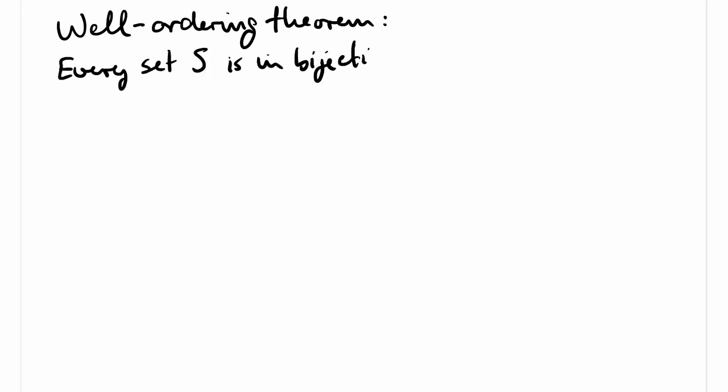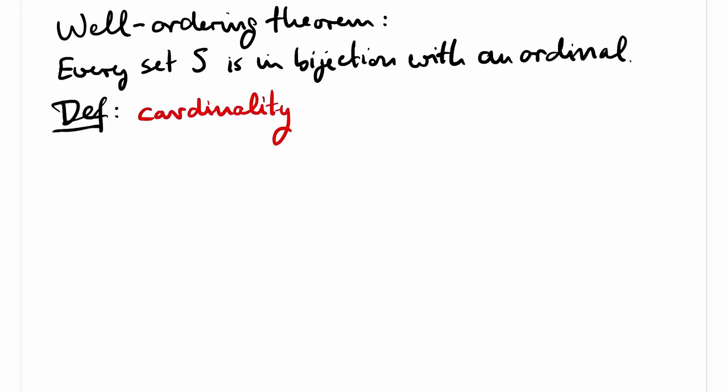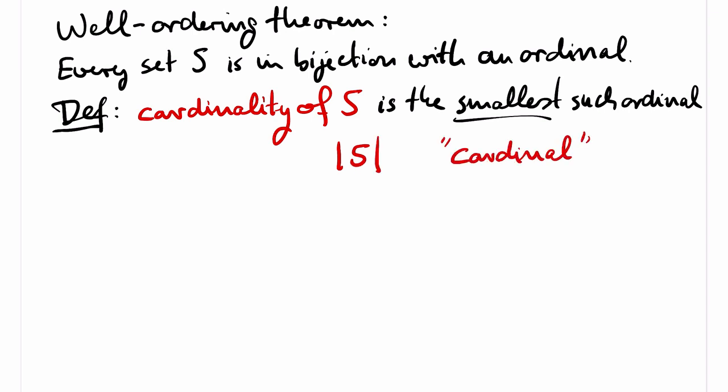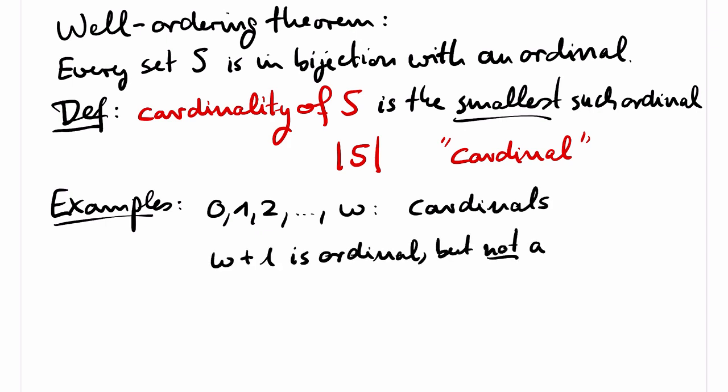The well-ordering theorem implies that every set is in bijection with an ordinal. The cardinality of a set S is defined to be the smallest ordinal which is in bijection with S. We write S in vertical lines for this ordinal and call such an ordinal a cardinal. Examples of cardinals are 0, 1, 2, and so on, because these are ordinals with the property that all smaller ordinals have smaller cardinality, are not in bijection. Another example of a cardinal is omega. Omega plus 1, however, is not a cardinal, since omega plus 1 is clearly in bijection with omega.